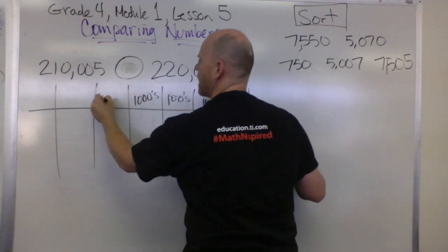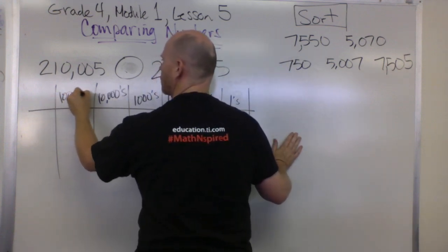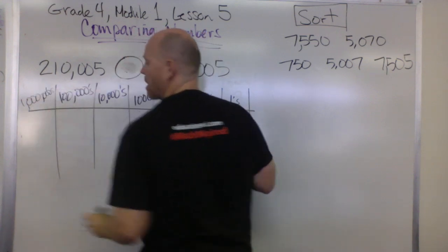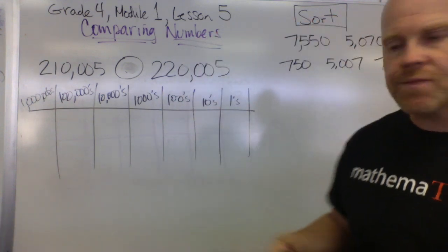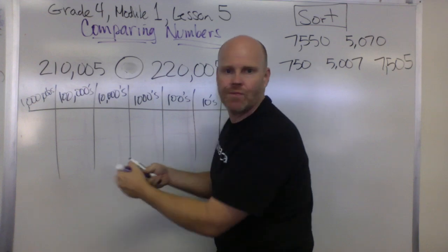And then hundred thousands. We could go to millions but we don't need it. So there's my place value chart and we're going to put these two numbers in the place value chart.